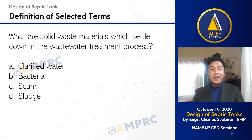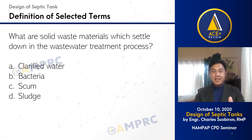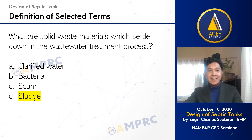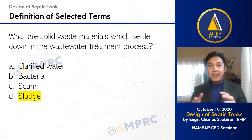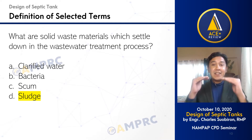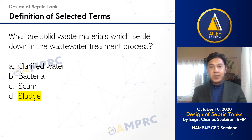Next question: what are solid waste materials which settle down in the wastewater treatment process? A. Clarified water. B. Bacteria. C. Scum. D. Sludge. The right answer is sludge. There are three layers in our septic tank. At the top, we have scum, which are fatty materials that float in the liquid. In the middle layer, we have the partially clarified water. And at the very bottom, we have the sludge, which are solid materials that settle down at the bottom of the septic tank.